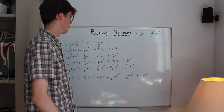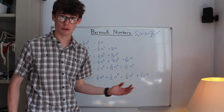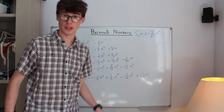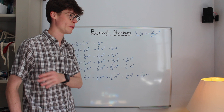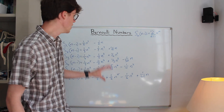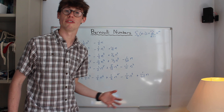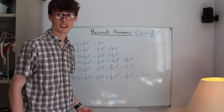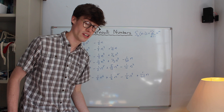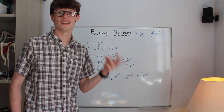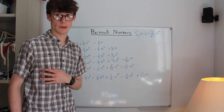Hello everyone, welcome back to another video. This is going to be the first in a series of hopefully two, three, or four videos about Bernoulli numbers — a really fascinating sequence of numbers that shows up in all sorts of places in maths. We're going to be deriving them today the way that Bernoulli did, the way that Jacob Bernoulli first found them, but then we're going to explore how they relate to the cotangent function, the hyperbolic cotangent function, and through that, the zeta function.